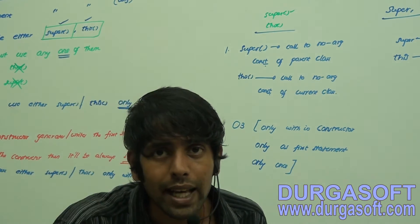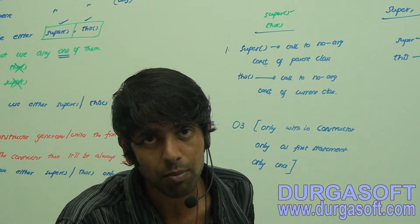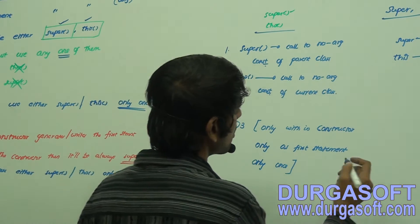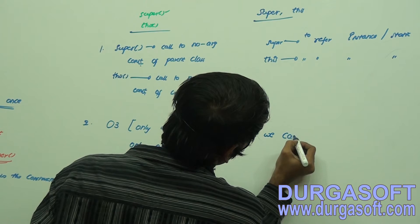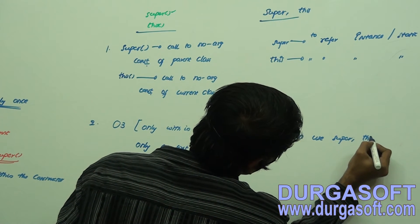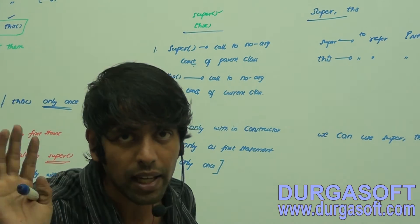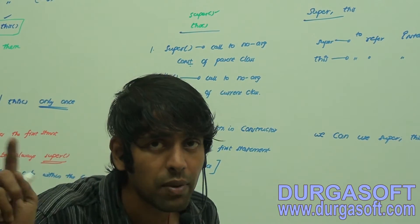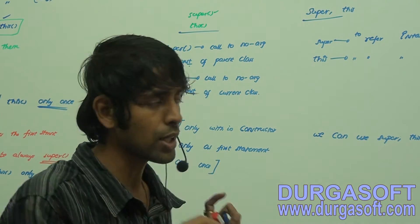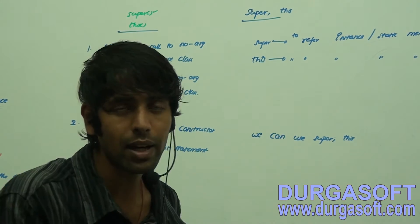Only within the constructor, only as the first statement, only once — that's O3. Now, for the super and this keywords, there are no such restrictions. Both keywords can be used any number of times, anywhere, except in static areas. That's very important to remember.